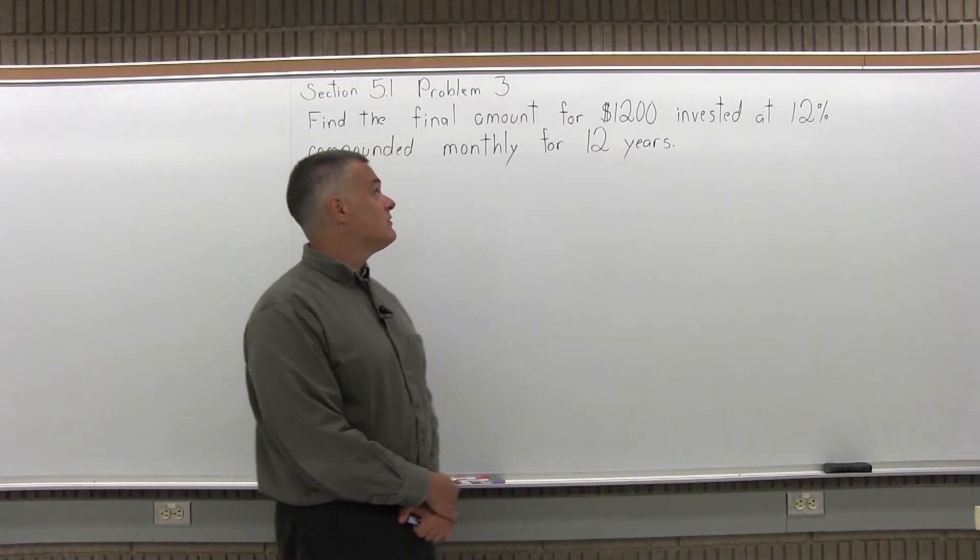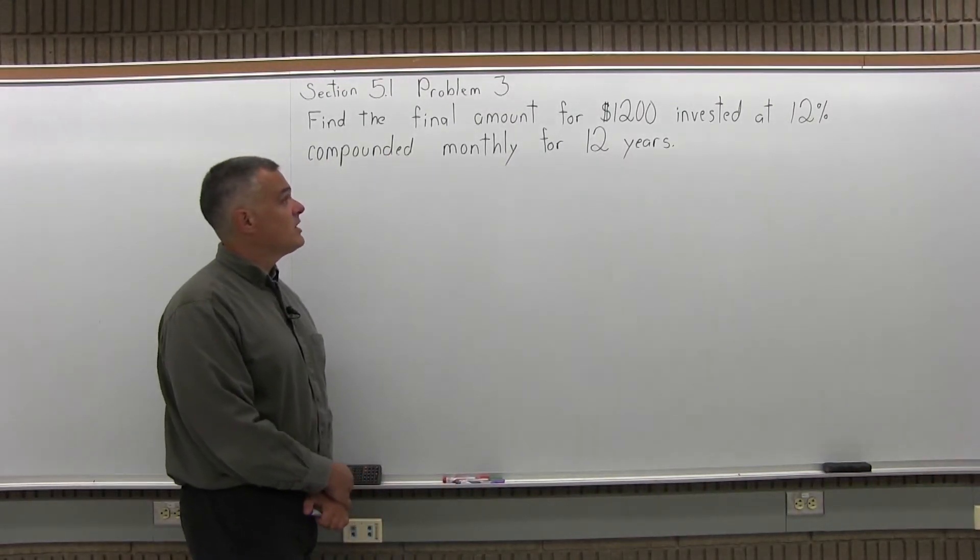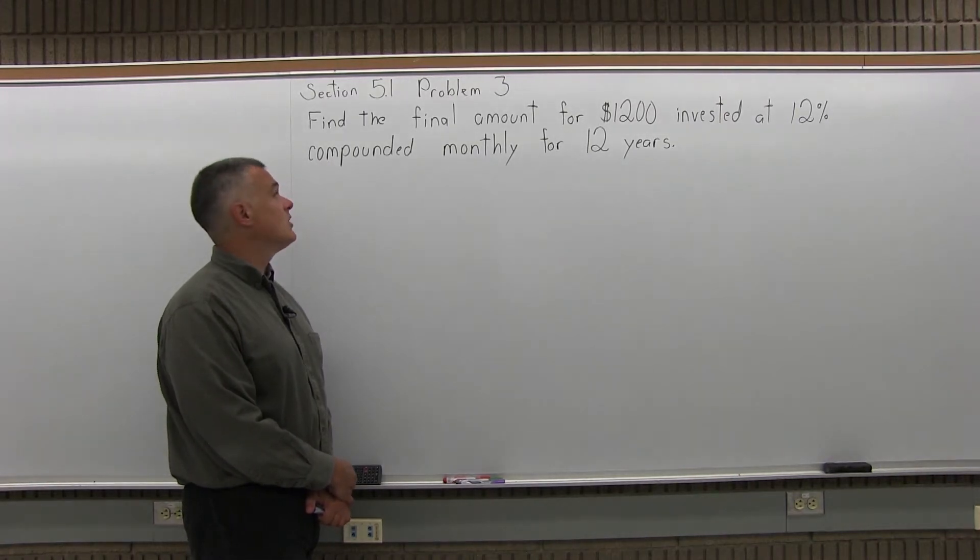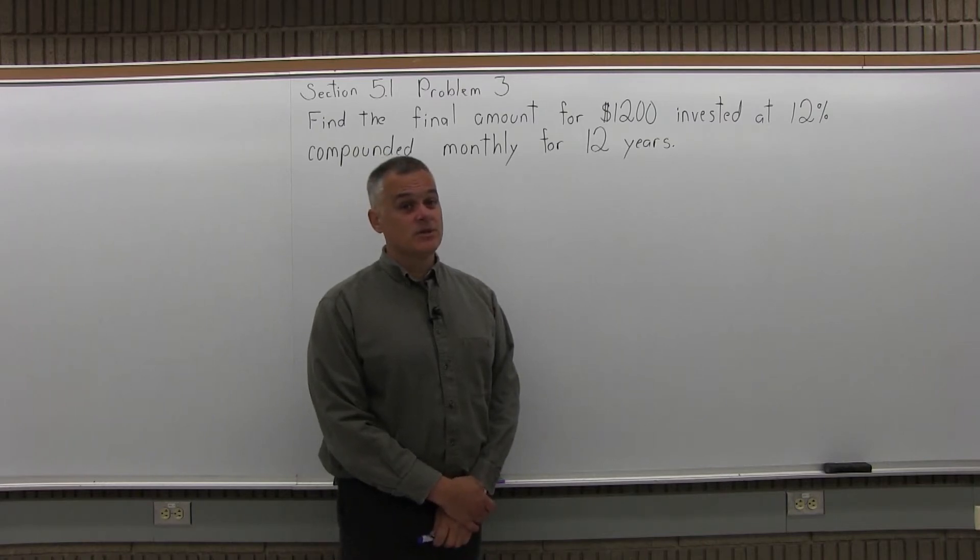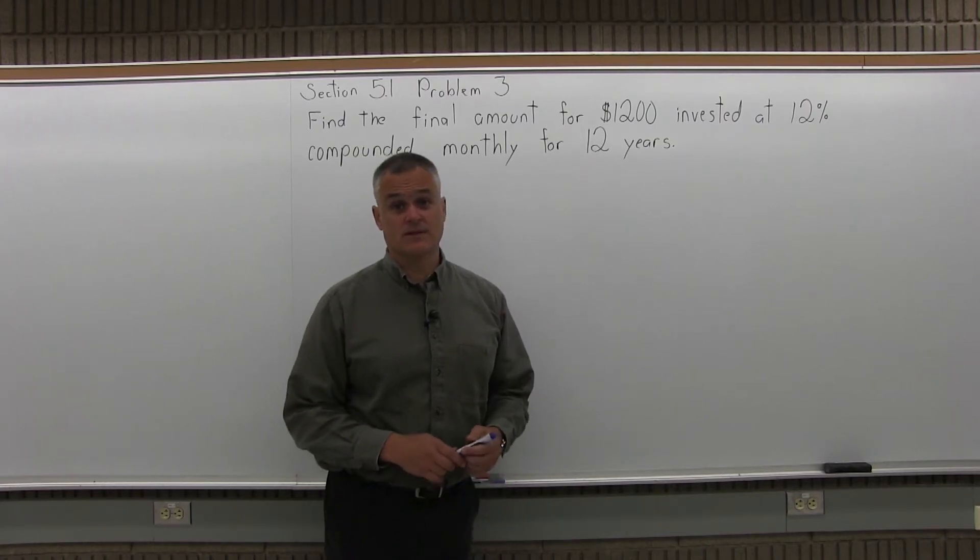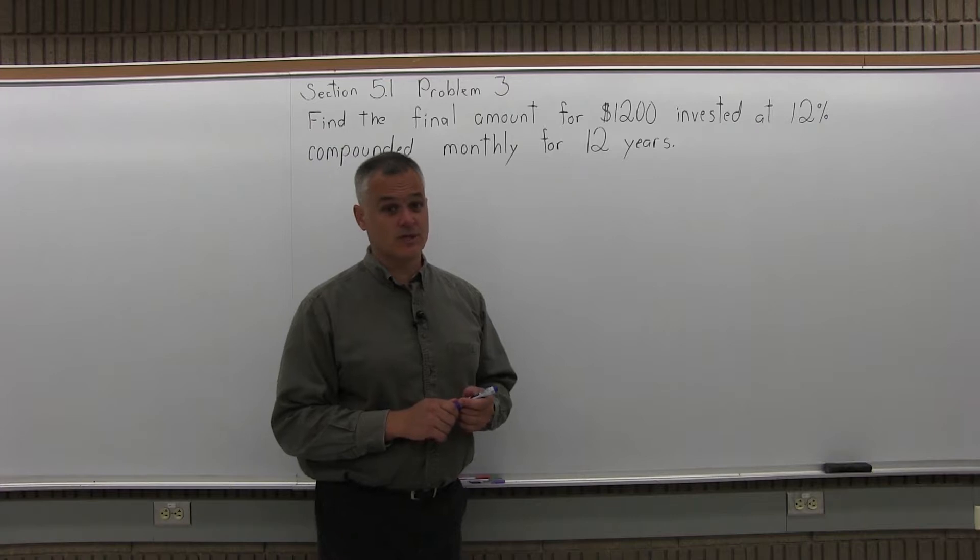This is Problem 3 from Section 5.1. It says find the final amount for $1,200 invested at 12% compounded monthly for 12 years. Now if you notice, it's very similar to number 2 except it has compound interest instead of simple interest and that's what makes it an interesting problem.